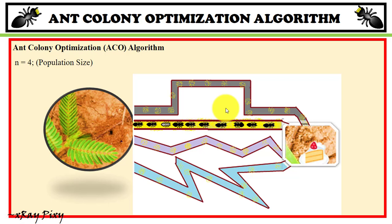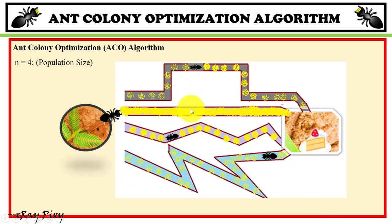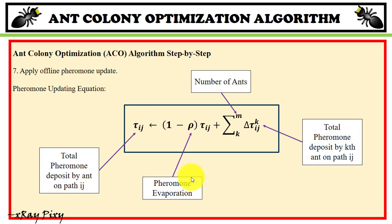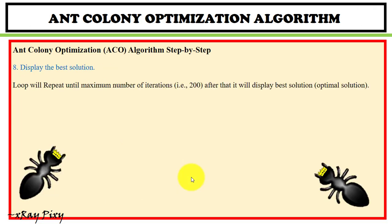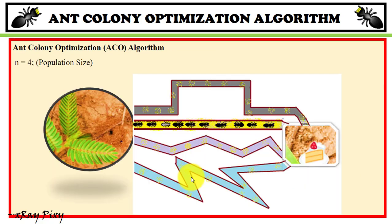Among all paths, the path with the strongest pheromone concentration is identified, and eventually all ants follow this route. In the algorithm, pheromone values are computed for each ant, the best and worst solutions are identified, and the loop repeats until the maximum number of iterations is reached. The best solution — the optimal path covering minimum distance between source and destination — is then displayed.